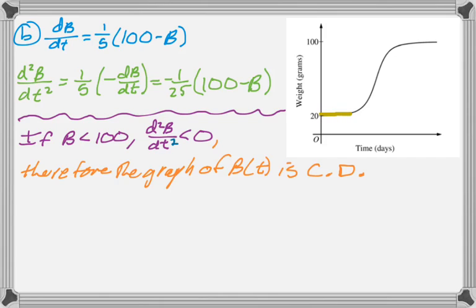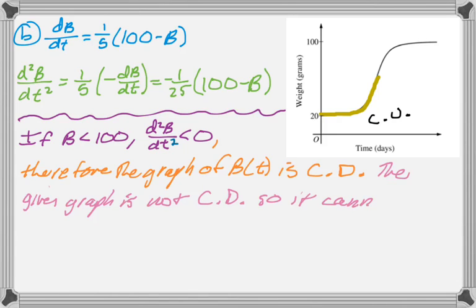And if we take a look at this graph, right around there, the graph is definitely concave up. And so since that's the case, it cannot be the graph of B(t). That's really all we need to do, is just look for some kind of inconsistency.